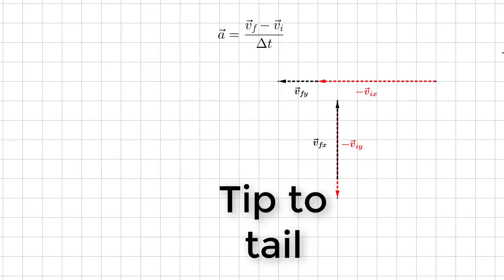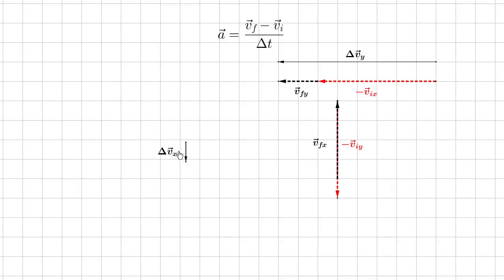Now that I have my components sorted out, I can do the tip-to-tail addition. There's the change in the Y component, there's the change in the X component. Now I'm going to just add them together.